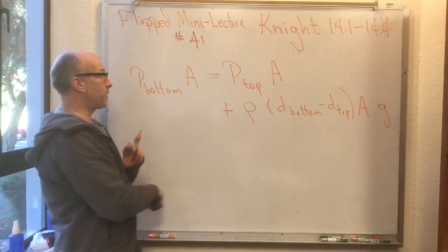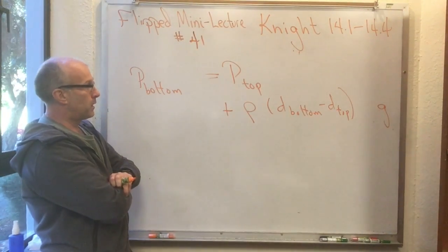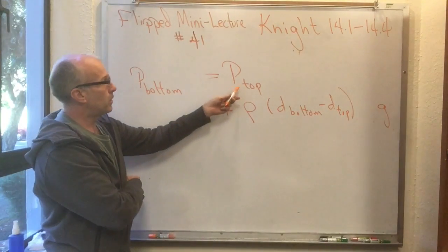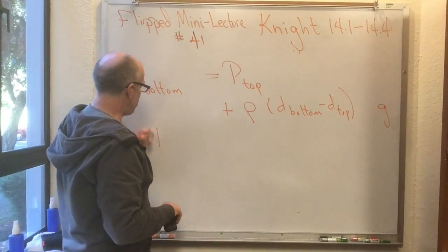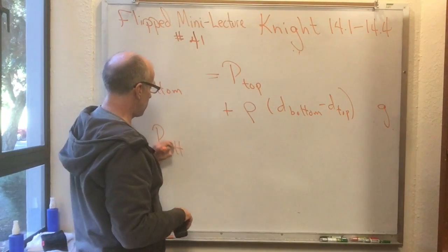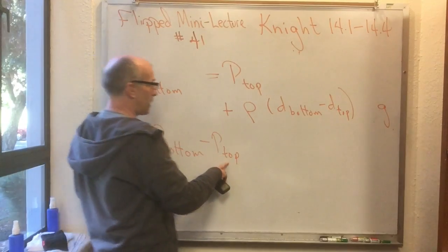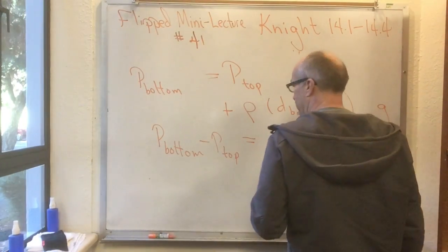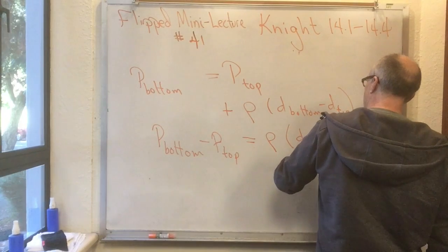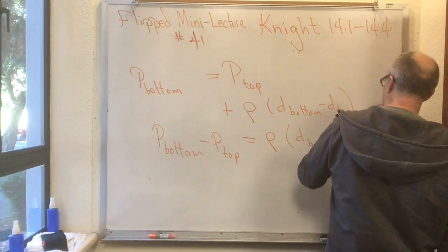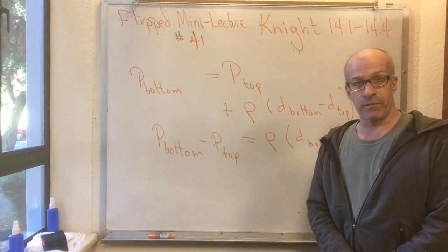Of course we also have g in that term. Now notice: the area A cancels out entirely. So we've just learned how pressure varies with depth. P-bottom minus P-top equals rho times (d-bottom minus d-top) times g. Now you know how pressure varies as a function of depth.